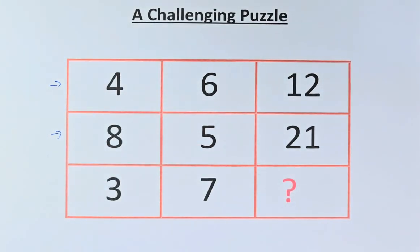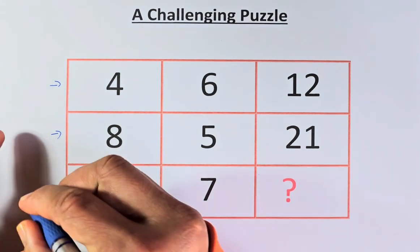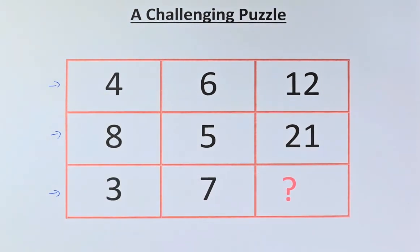So we need to make 4, 6 equal to 12, 8, 5 equal to 21 and 3, 7 equal to question mark. So have you managed to solve it? If you can't, this is the solution to this puzzle.